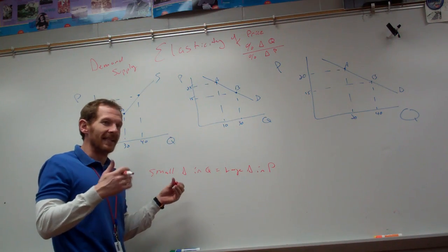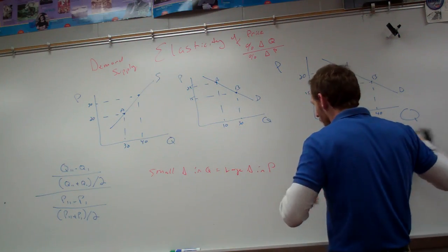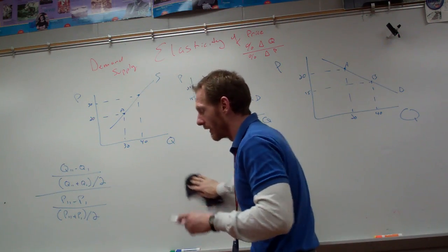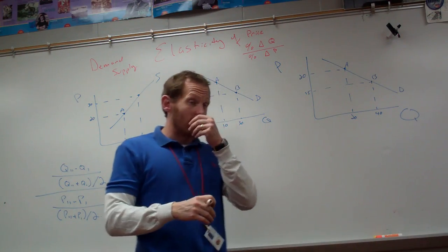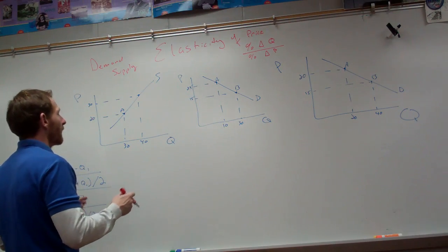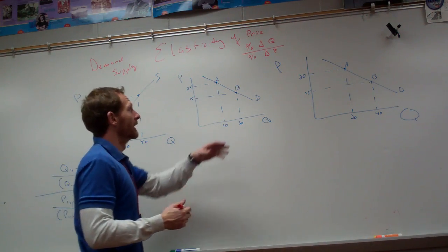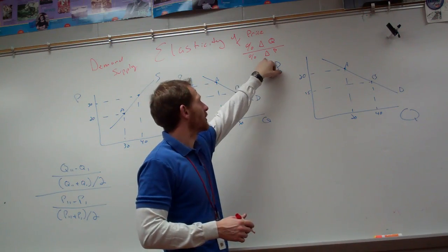So this is important because this is how companies figure out how much they're going to charge for goods. I mean they look at cost obviously, but this is a determinant of like pricing strategy. Where is a pricing strategy? Oftentimes we use elasticity analysis. So essentially what the formula is, is the percent change in quantity over the percent change in price.